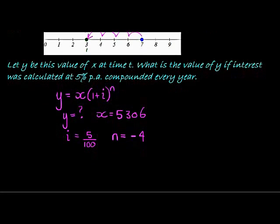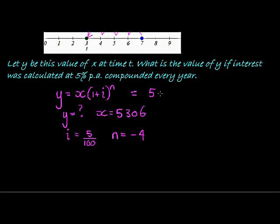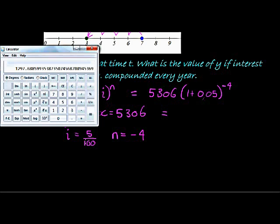And now if I substitute all of this into my formula, I get 5306 times (1 plus 0.05) to the power of negative 4. And if we work that out, 5306 times in a bracket, 1.05, added to the power of 4 but with a negative, okay it's negative 4, gives me 4365.26.